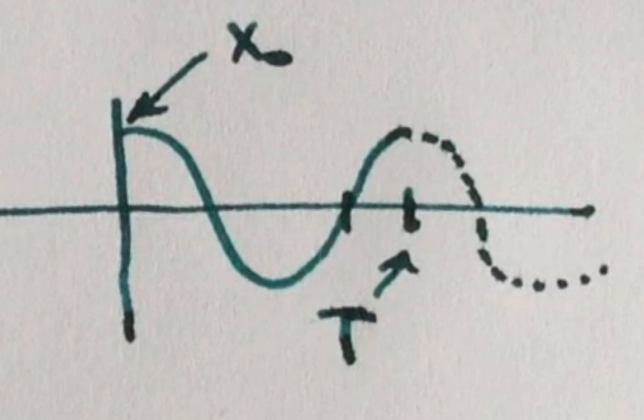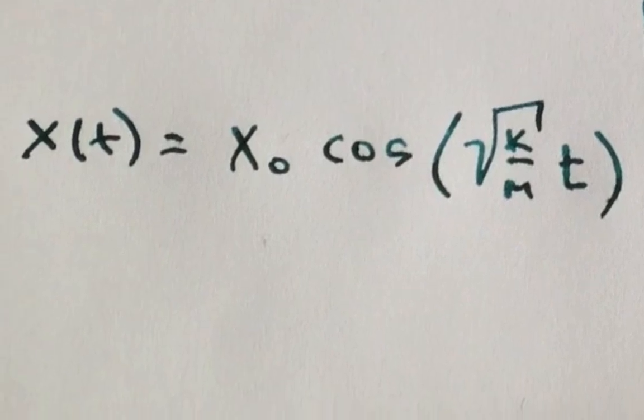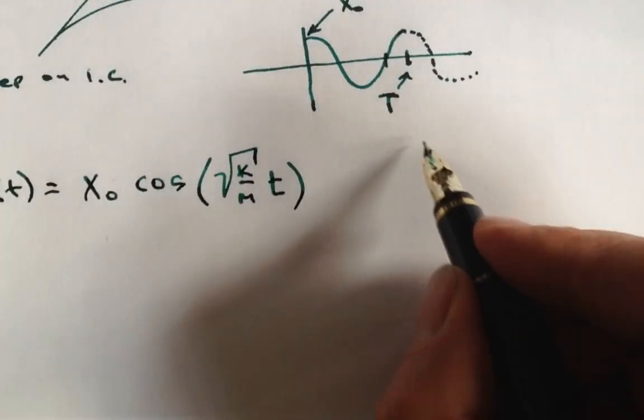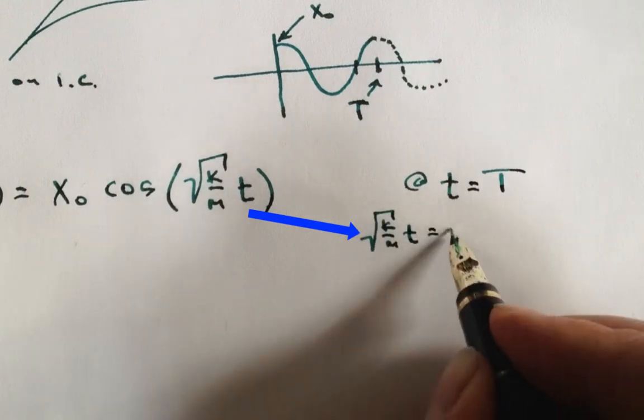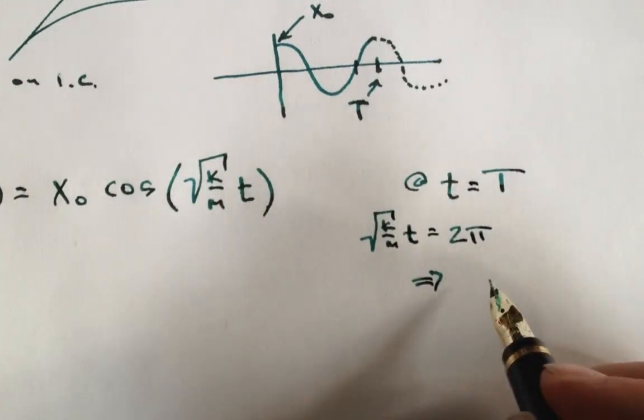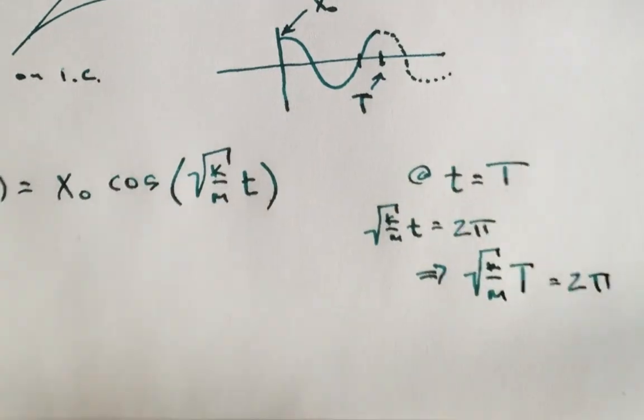The cosine function completes a cycle every two pi radians. So another way of phrasing the question is this: How much time does it take the argument of the cosine function to go from zero to two pi? How much time does it take? Well, when that much time has elapsed, we know that the time is equal to one period. That's the definition of the period and this allows us to determine the actual value of the period.